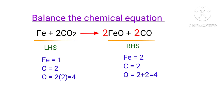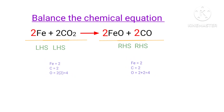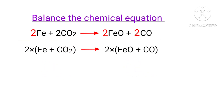Now we need to balance the ferrous atoms. To do this, we need to put a coefficient of two in front of Fe. The equation is now balanced. We can write the equation as 2Fe + CO₂ gives us 2FeO + CO.